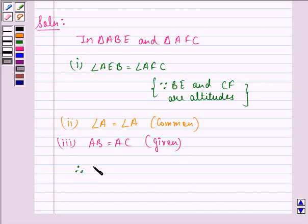Therefore, triangle ABE is congruent to triangle ACF by AAS, that is angle-angle-side congruence rule.